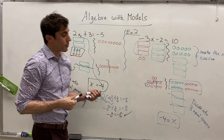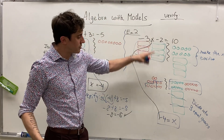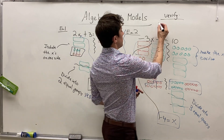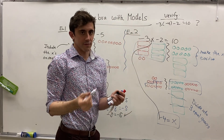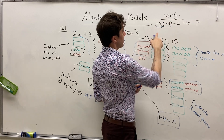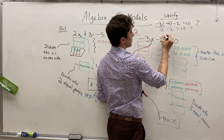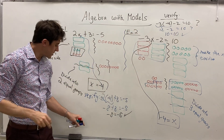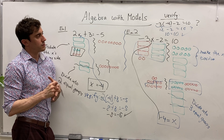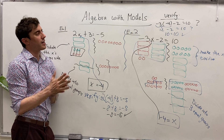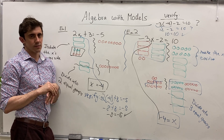And there we have it. To verify our solution, we plug in x equals negative four back into our original equation. We have negative three times negative four, minus two, equals ten. Two negatives multiplied give positive twelve, minus two — and twelve minus two is indeed ten. So we know both solutions are correct, and that's always a nice feeling. I hope this helps correct any misunderstandings you might have had using models with algebra, because I know it can be a little tricky at the start. If you have any questions, comments, or suggestions, or requests for future videos, please comment down below. Thanks for watching.